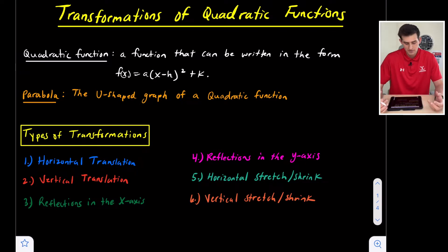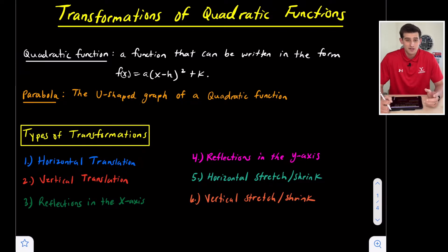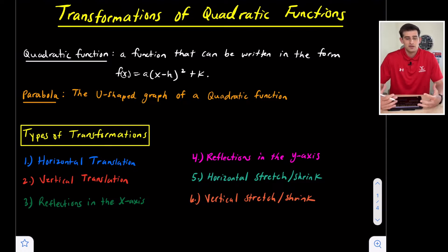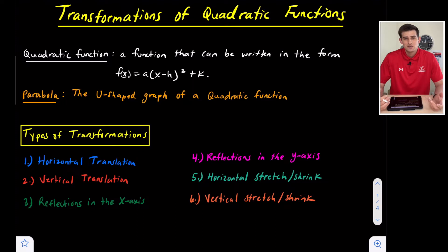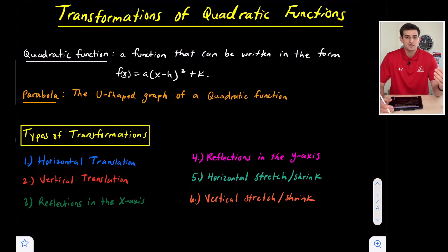We know there are other forms — this form is specifically called vertex form, and there is a standard form, an intercept form, and other forms we can use to represent a quadratic function. The biggest takeaway is you're looking for an exponent of 2 on your x variable.